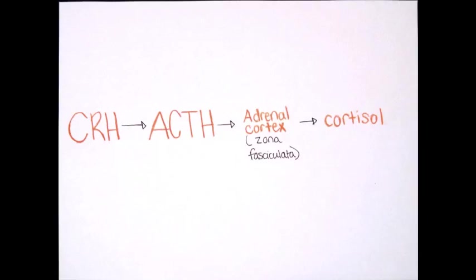ACTH then travels to the adrenal cortex of the adrenal gland. The adrenal gland consists of three zones, and the zone that is involved in this process is the zona fasciculata. In response to ACTH, the zona fasciculata releases cortisol, a hormone categorized as a glucocorticoid. This primary function of cortisol is to increase blood sugar, suppress the immune system, and aid the metabolism of fat, protein, and carbohydrate.